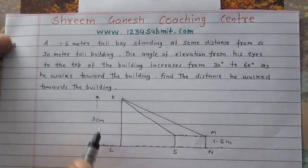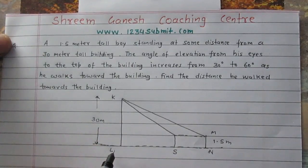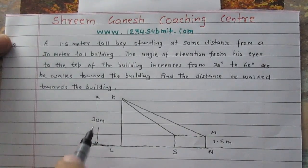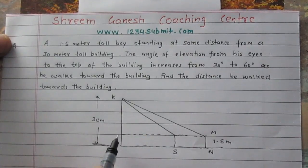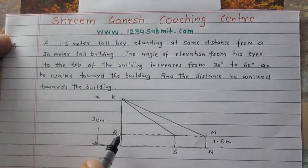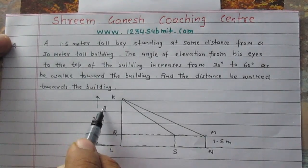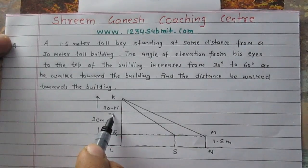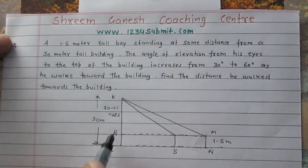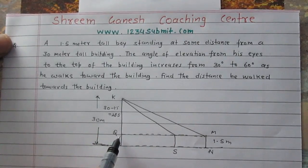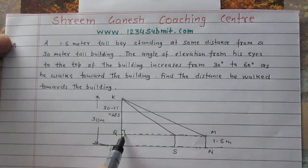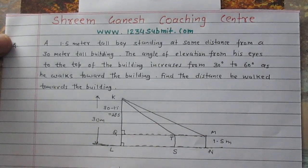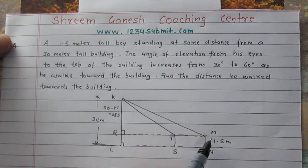So height of the boy is 1.5 meters and height of the building is 30 meters. So this line segment, length of the line segment KL, I am just denoting as 30 meters. I mean as 1.5 meters. You see that the line segment KQ will be 30 minus 1.5, 28.5 meters. So KQ is 28.5 meters. Right angle triangle because the building is standing on the ground perpendicular. Also angle KQM is 90 degrees perpendicular.